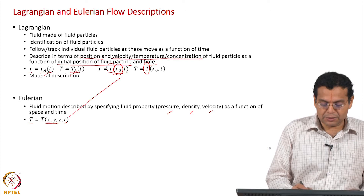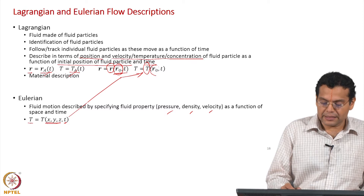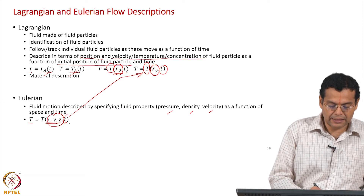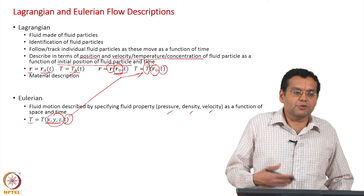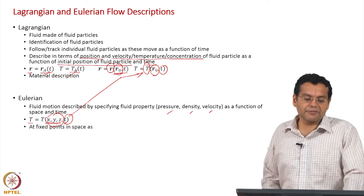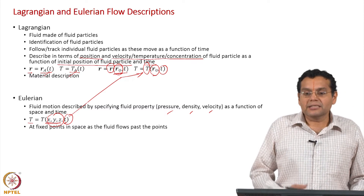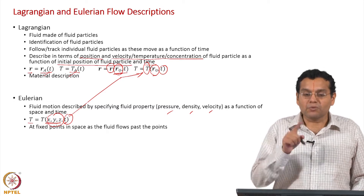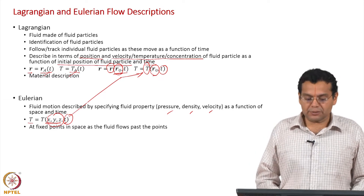Comparing the two: in Lagrangian, the independent variables are initial position and time; in Eulerian, the independent variables are spatial location and time. The independent variables differ because the measurement approaches are different. Eulerian measurements are done at a fixed point in space as the fluid flows past, with different fluid particles passing through that point. In Lagrangian, we follow one fluid particle; in Eulerian, we are at a fixed point while different fluid particles pass through.